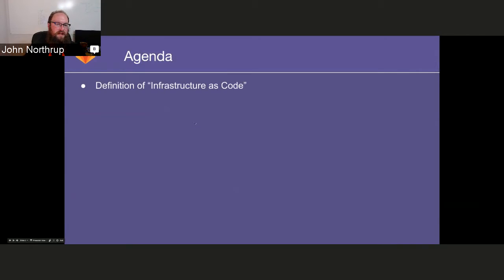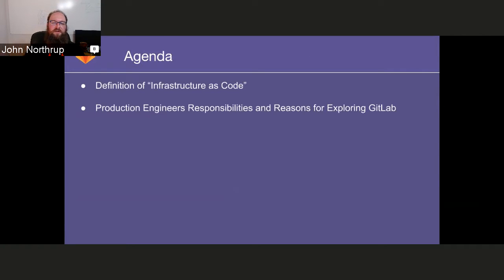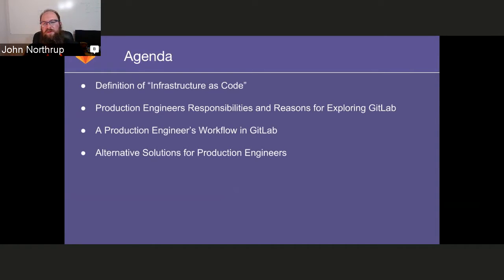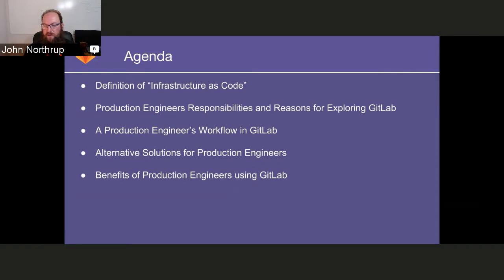The agenda we've got set up for today is multifold. We're going to look at the definition of infrastructure as code, talk about production engineers and their responsibilities, explore how we're using GitLab for those responsibilities, cover their workflow, discuss alternative solutions, and talk about the benefits of production engineers using GitLab in their day-to-day workflow.